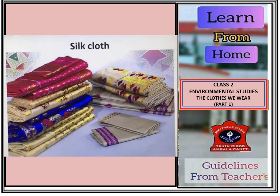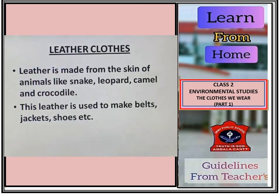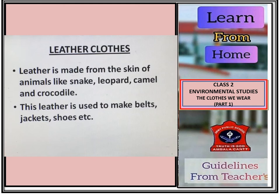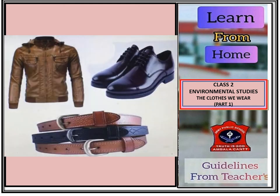So after this, we get a silk cloth. Next are leather clothes. Leather is made from the skin of animals like snake, leopard, camel and crocodile. This leather is used to make belts, jackets and shoes, which you or your father wear. You can see here in the picture jackets, shoes and belts.